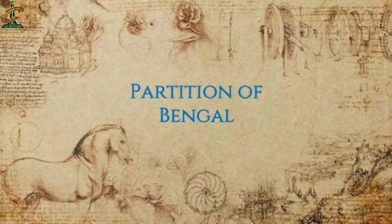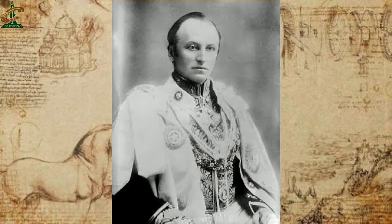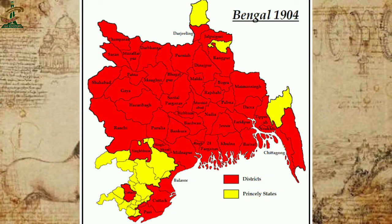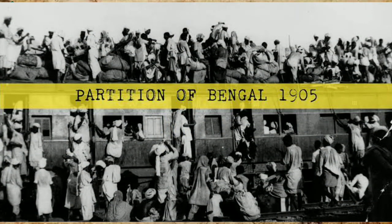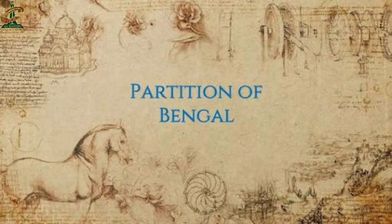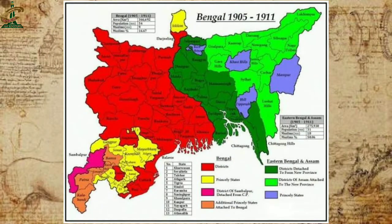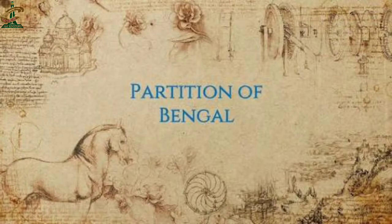Lord Curzon نے Bengal کو تقسیم کرنے کا مشورہ دیا۔ وائسرائے نے یہ مشورہ کیوں دیا؟ کیونکہ انگریزوں کے مطابق اتنے بڑے صوبے کا انتظام ایک گورنر کے بس کی بات نہیں تھی۔ Bengal دوسرے صوبوں سے سب سے بڑا تھا اور administrative issues آ رہے تھے۔ اس لیے Lord Curzon نے British government کو suggest کیا کہ they should divide Bengal into two parts — Eastern Bengal and Western Bengal۔